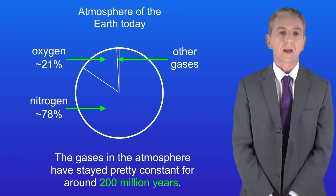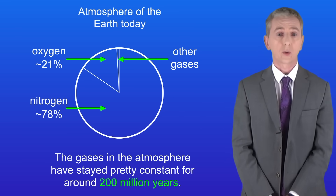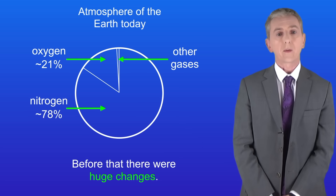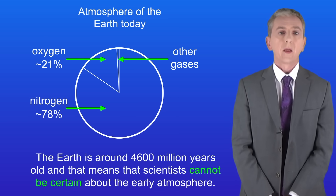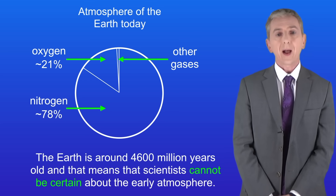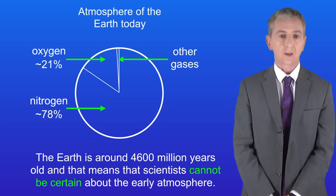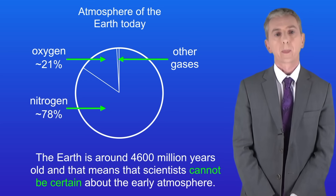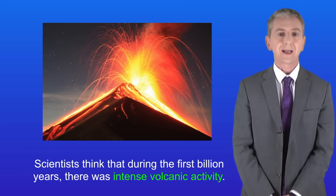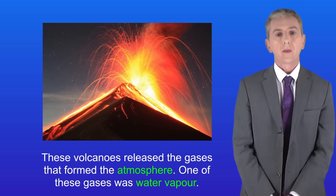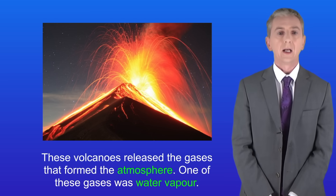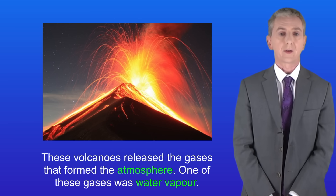The gases in the atmosphere have stayed pretty constant for around 200 million years, but before that there were huge changes. The Earth is around 4,600 million years old, which means scientists cannot be certain about the early atmosphere. Scientists think that during the first billion years there was intense volcanic activity, and these volcanoes released the gases that formed the atmosphere.